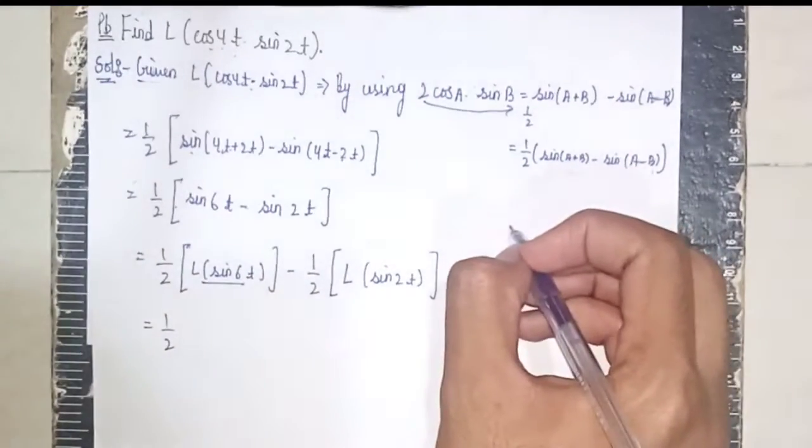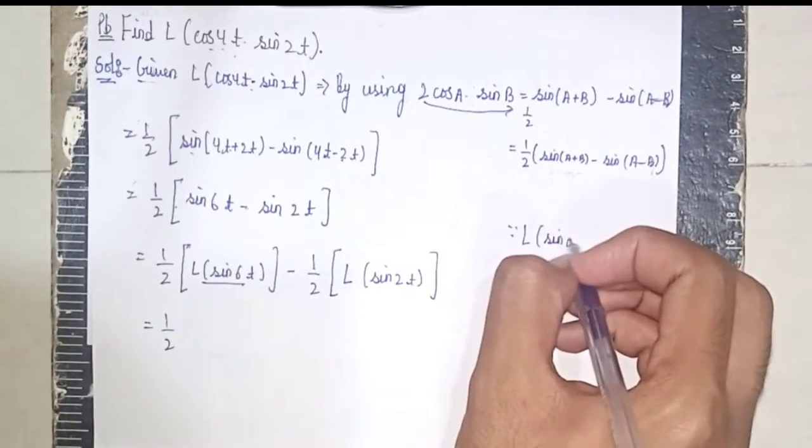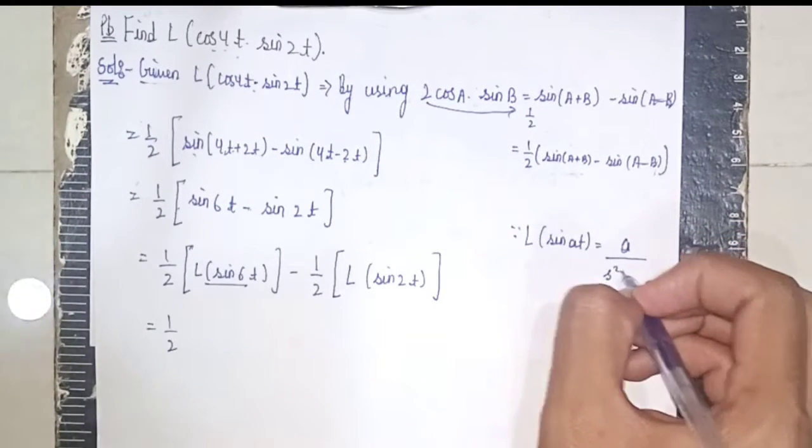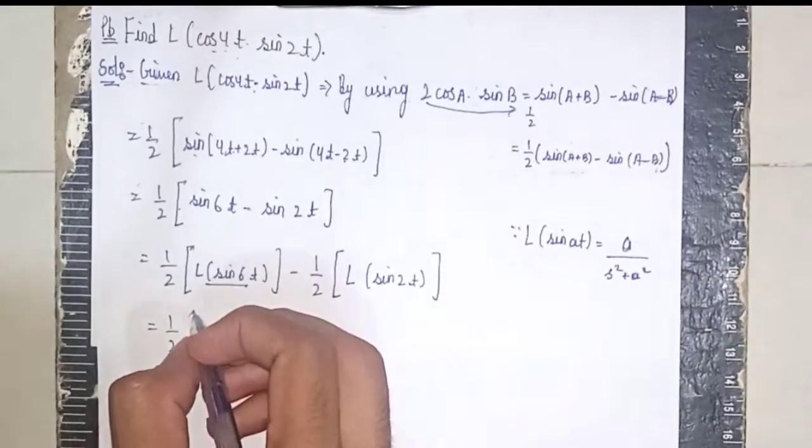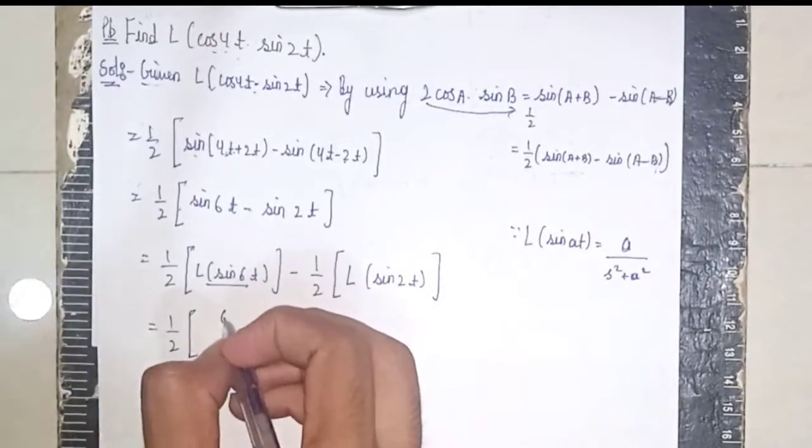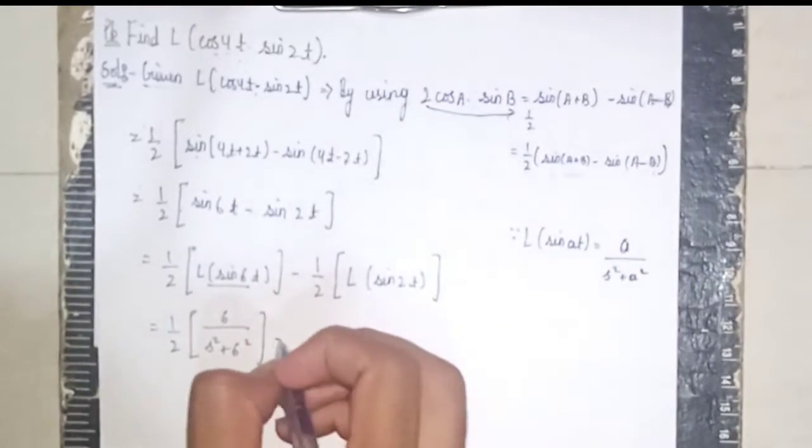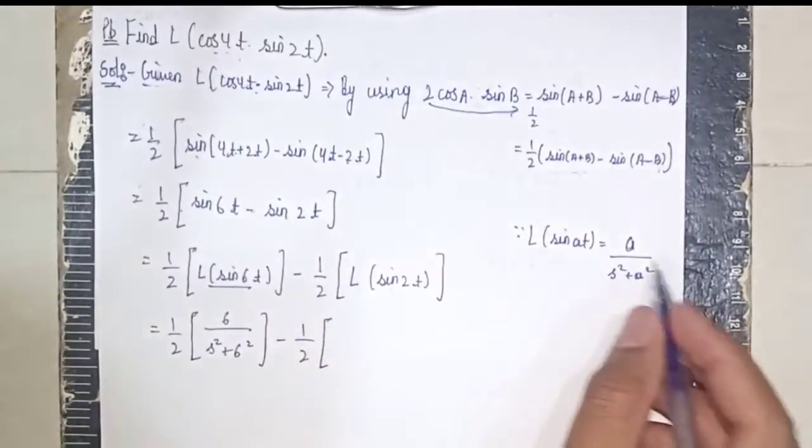Now the Laplace formula is Laplace of sin at equals a by (s squared plus a squared). This is the formula. It will become 6 by (s squared plus 6 squared), close the bracket.